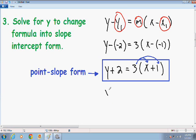So the left-hand side of the equation stays the same. y plus 2 is equal. 3 multiplied by x is 3x, and 3 multiplied by 1 is positive 3.